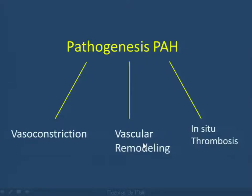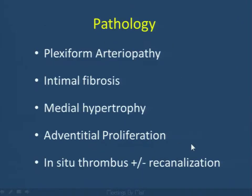Simply put, as a radiologist, we have to think: what can we contribute to this understanding of the pathogenesis of primary pulmonary hypertension? There's going to be vasoconstriction, vascular remodeling, and possibly in situ thrombosis.